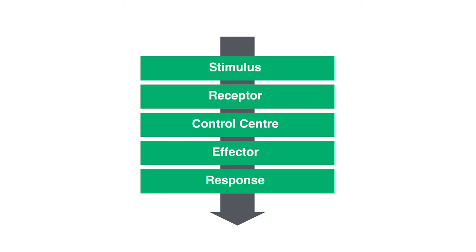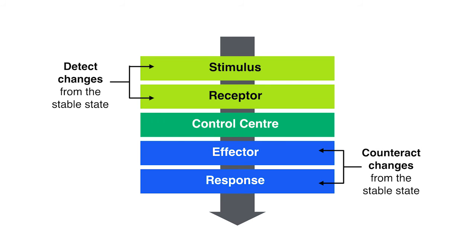By this point, it should be pretty obvious that understanding each component of homeostasis is pretty important, at least for the next year or so. Just remember: homeostasis involves detecting and counteracting change. The stimulus and receptor detect change, the effector and response counteract change, and the control center oversees everything like an umpire and ensures things are running smoothly.